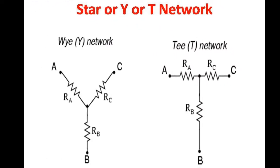Now we shall see all the ways three resistances can be connected to form a star network. We can see that a Y network and a T network are connected in star fashion.